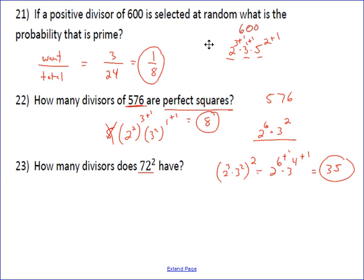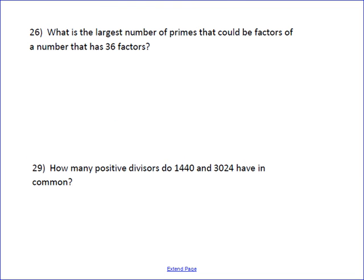Okay, last 2. What is the largest number of primes that could be factors of a number that has 36 factors? Well, if you think about what we're going to be doing here, we're going to be adding 1 to each of the exponents of the prime factorization. So we need to try to get as many as possible in a prime factorization, such that when we add 1 to the exponents, we're going to multiply together to get 36. Well, remember 36 is just going to be 4 times 9, so 2 times 2 times 3 times 3. So essentially, the largest number of primes is going to be 4.